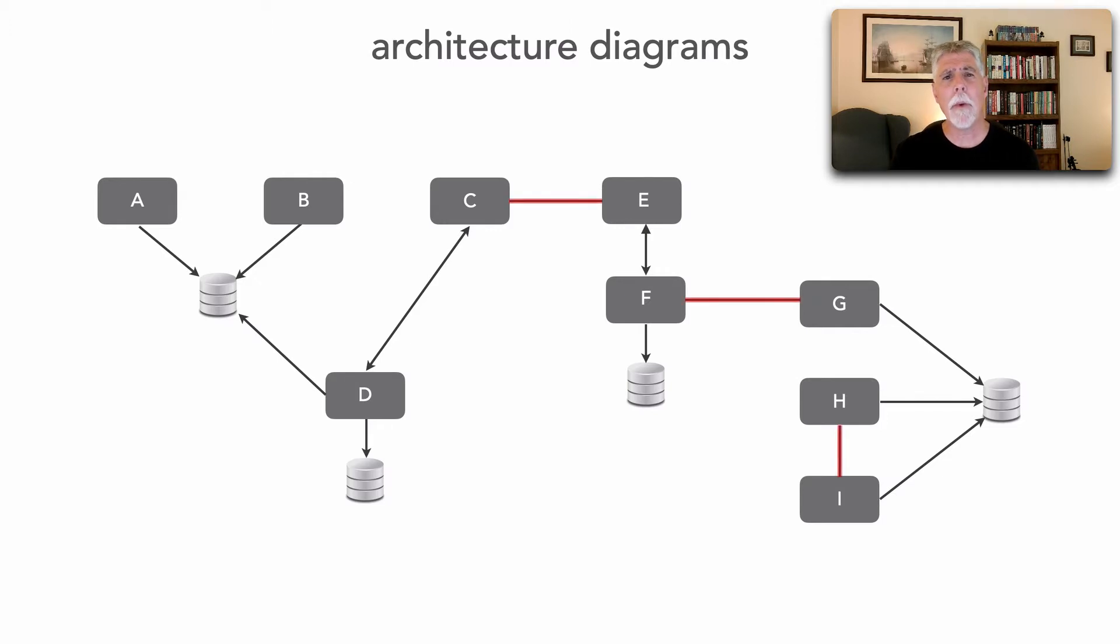As a matter of fact, I'd really like to start with lines without arrows, because all this indicates is that there is a coupling level between these services, for example C and E. But I don't know the nature of that coupling. This does not provide me enough information to extract any information out.